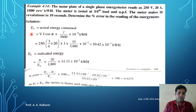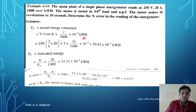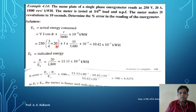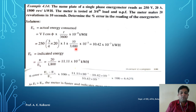First, let us find the actual energy consumed by the energy meter, which is V × I × cos φ × T divided by 3600 × 10⁻³ kilowatt hours. The applied voltage is 250 volts and the current is 20 ampere, but the meter is tested at three-fourth load, so the current becomes (3/4) × 20. The power factor is unity, so cos φ = 1. The time is 10 seconds, so T = 10/3600.